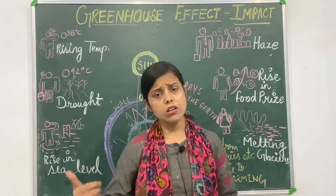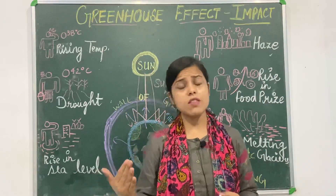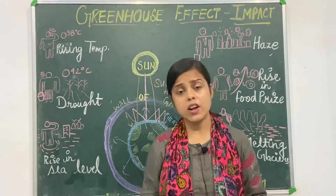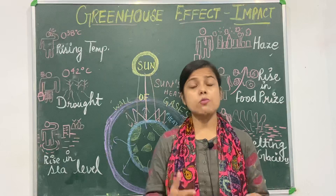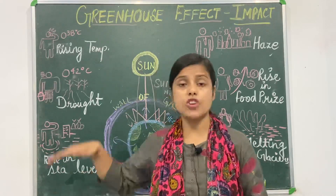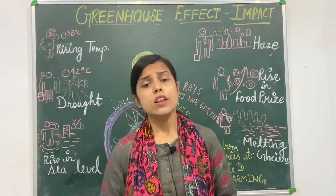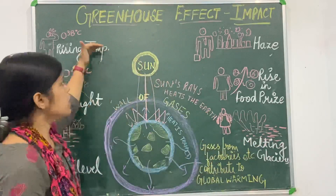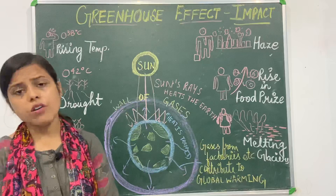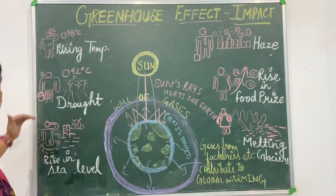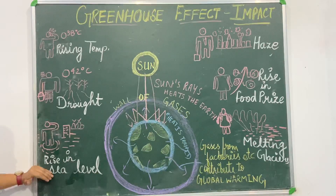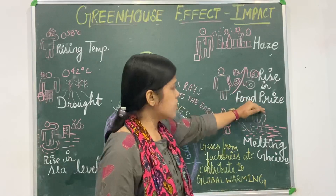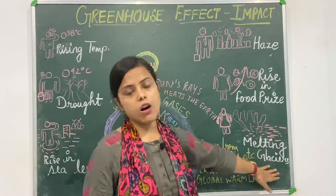There will also be a drastic change in the pattern of rainfall, leading to drought conditions, desertification, and possibly more rainfall resulting in floods due to changes in weather and climatic conditions. To summarize, the consequences of the greenhouse effect are: rising temperature, drought, rising sea level, haze, rising food prices, and melting of glaciers.